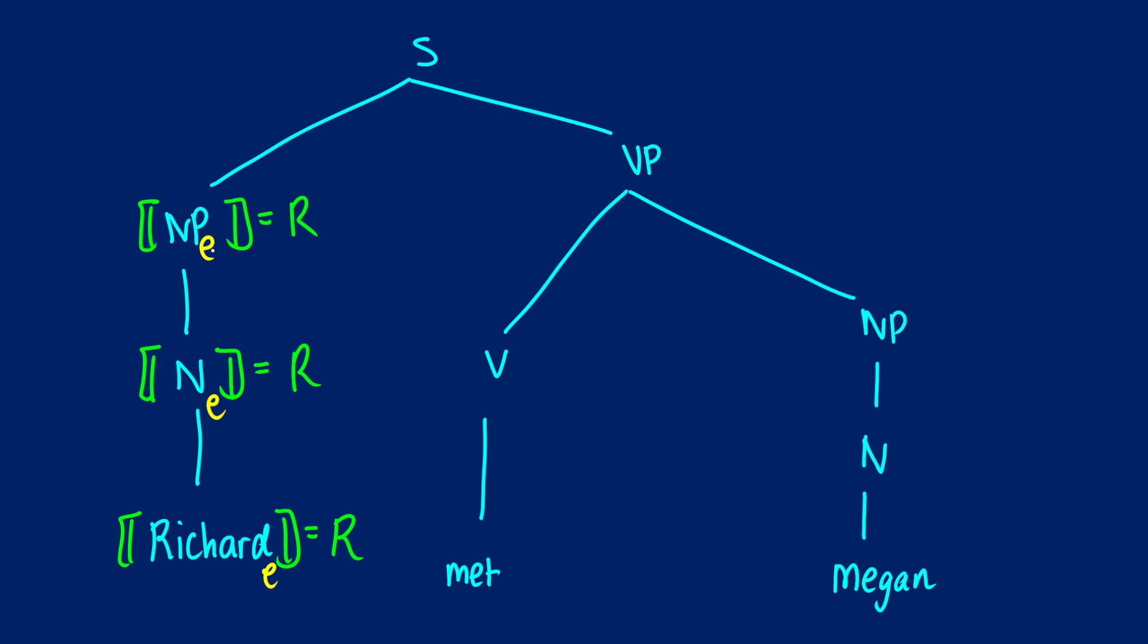So e is Richard. Now Richard met Megan. So Megan is going to be another entity. That's going to be another e. So what we're going to do here is we're just going to call Megan M and we're going to do the same thing because these are non-branching nodes. We can just pass the meanings up here.